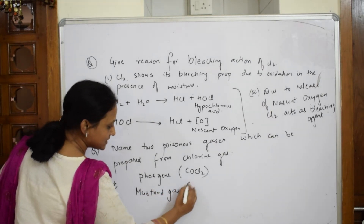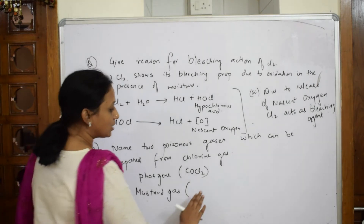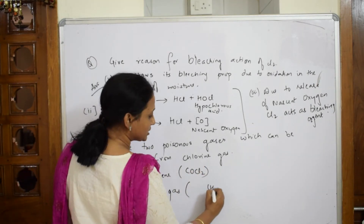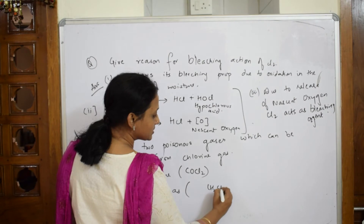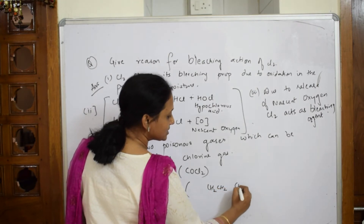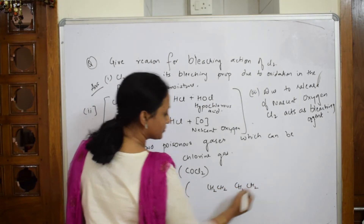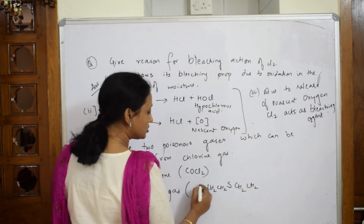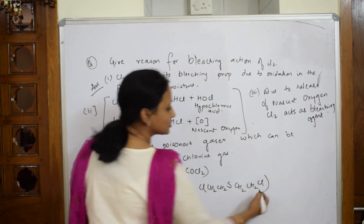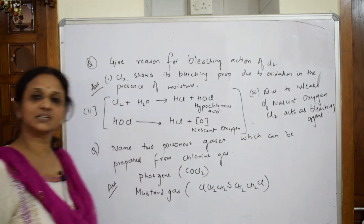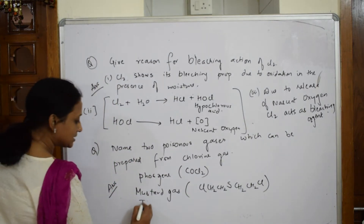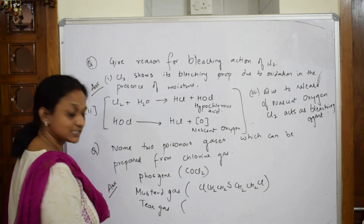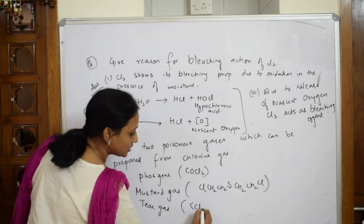The mustard gas formula: write CH₂ four times, with a sulfur atom in the center and chlorine atoms on both corners — giving (ClCH₂CH₂)₂S. The third poisonous gas is tear gas, with formula CCl₃.